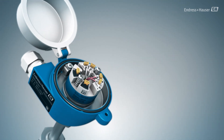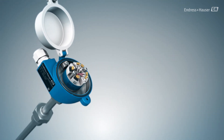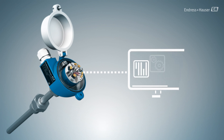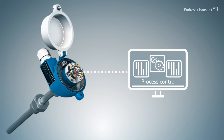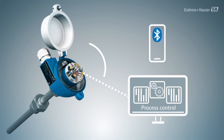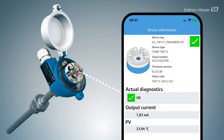The transmitter is the interface between the various sensor elements in the thermometer and the higher-level system for process control, as well as the asset management system. Typical communication signals are 4 to 20 mA, HART, or various digital protocols. In addition, the configuration, observation and troubleshooting of the transmitter can also take place directly in the field via Bluetooth technology with mobile devices.